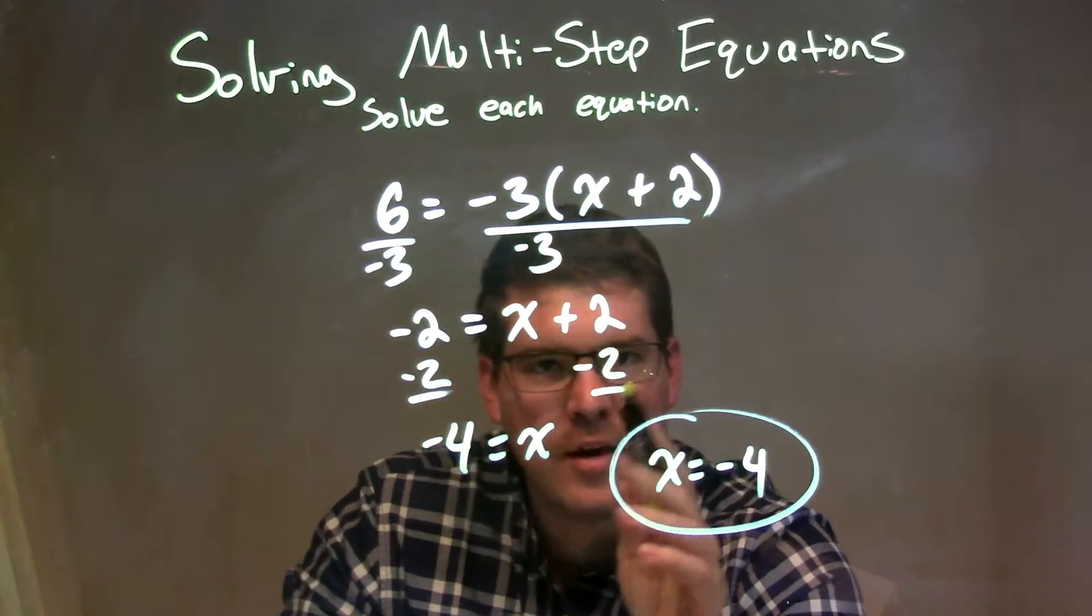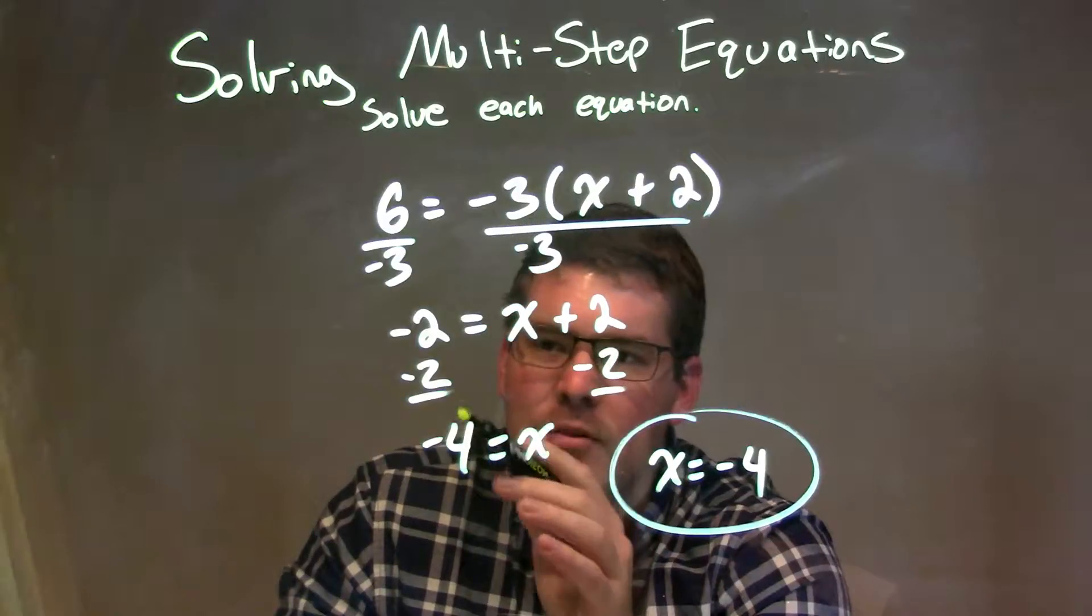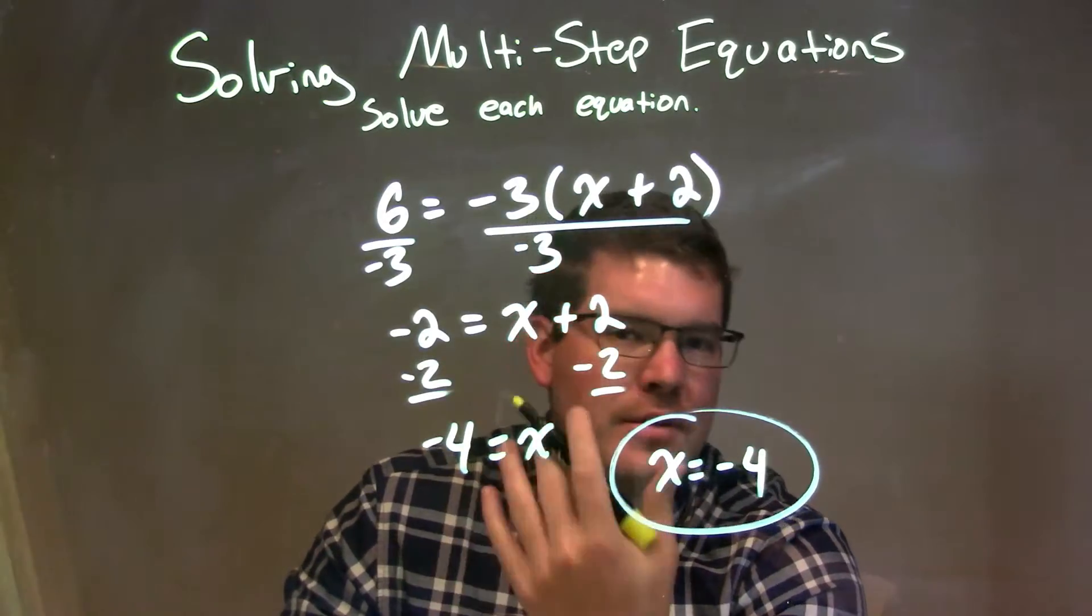I then subtract 2 to both sides, getting rid of that positive 2 right here, leaving the x isolated on the right. And then negative 2 minus 2 is a negative 4 on the left. I rewrote it to have x come first. And so again,